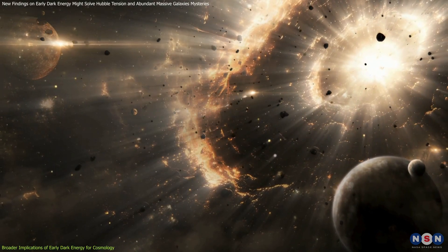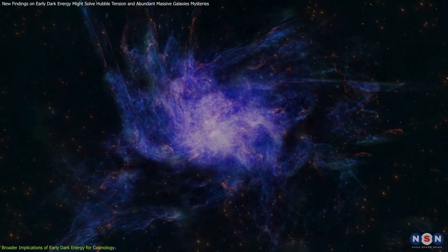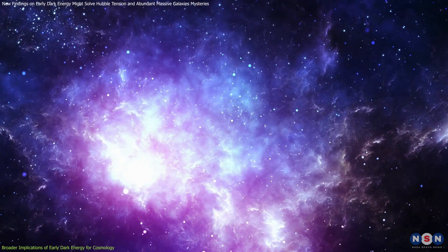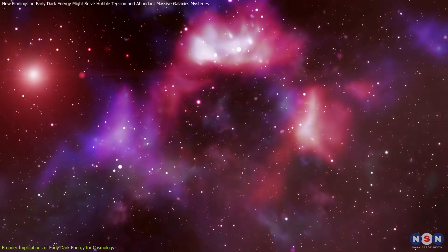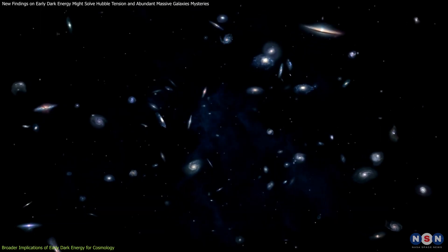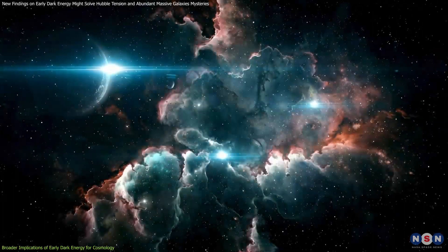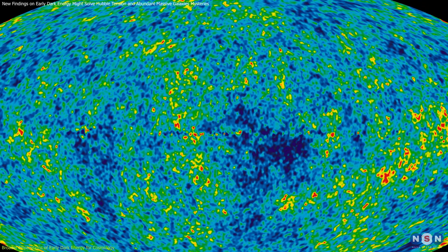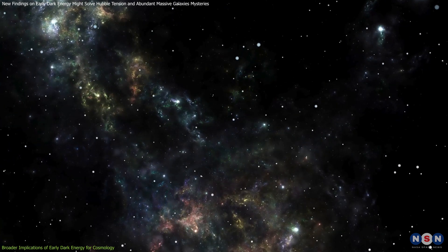Lastly, let's touch on the impact on cosmological parameters and structure formation. If early dark energy affects more than just the Hubble constant, it could alter our understanding of key cosmological parameters, such as the amplitude of density fluctuations and the matter power spectrum. These changes could lead to a more nuanced view of how galaxies, clusters, and cosmic structures form and evolve. It could also provide a new context for interpreting the cosmic microwave background and other critical observations in cosmology.